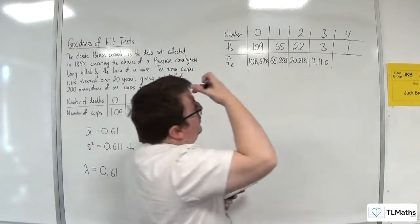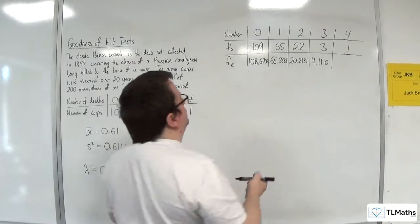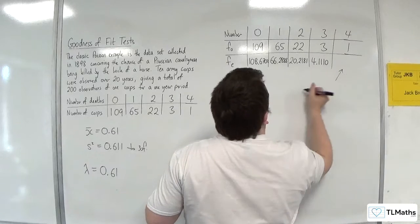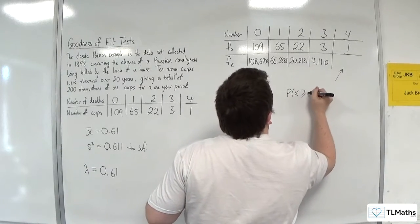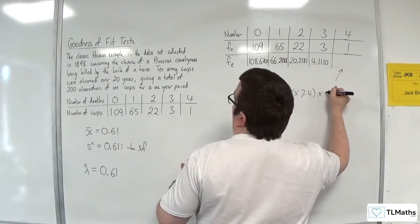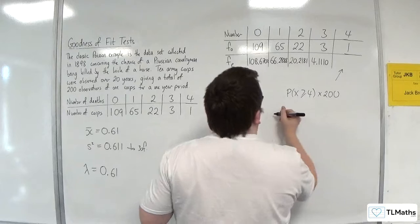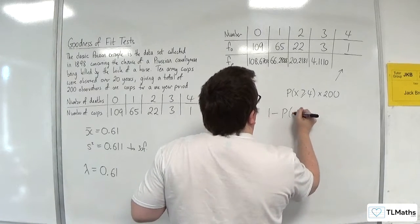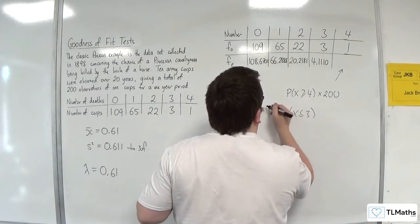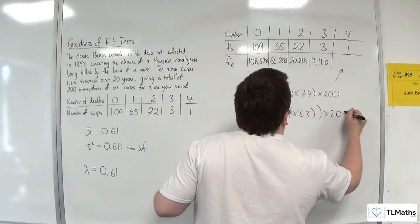And now we've got to do probability of X being greater than or equal to 4. So probability of X being greater than or equal to 4 times by 200.